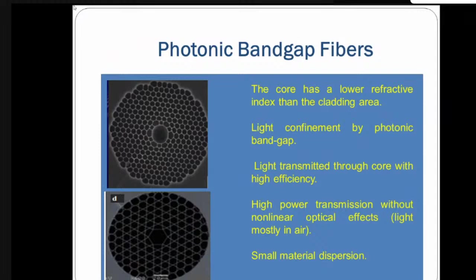The second type of hollow core PCF is the kagomé lattice hollow core PCF, which consists of fine silica webs arranged in a kagomé lattice surrounded by air. It allows ultra-broadband guidance but has relatively higher transmission loss compared to band gap hollow core PCF. Hollow core PCFs have unique features such as small non-linearity, low loss, and the possibility of filling the core region with various gases or liquids. Whenever light propagates through this core filled with a substance, this type of fiber can act as a sensor — one of the applications of photonic band gap fibers.